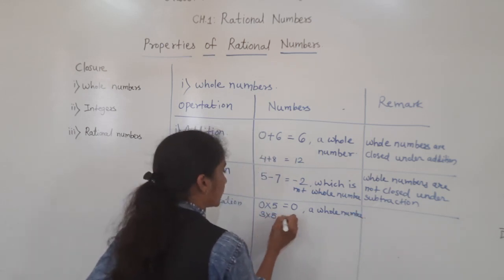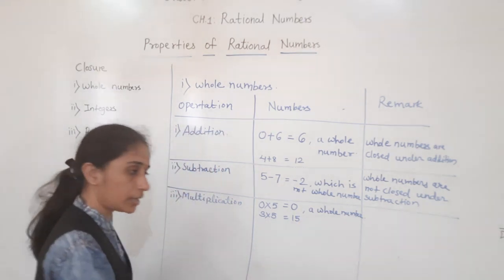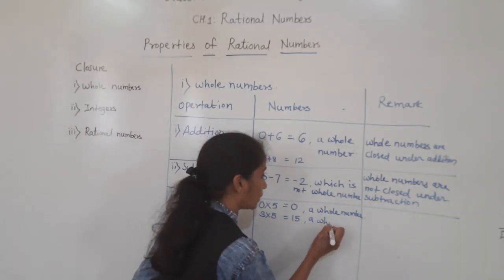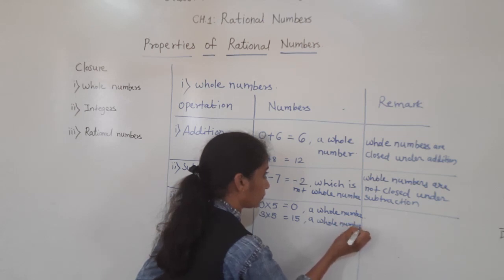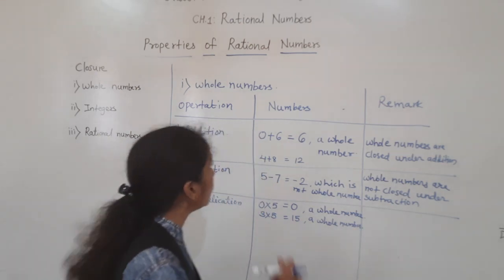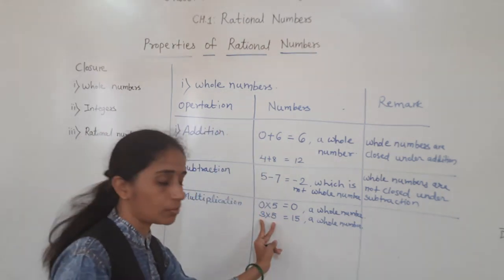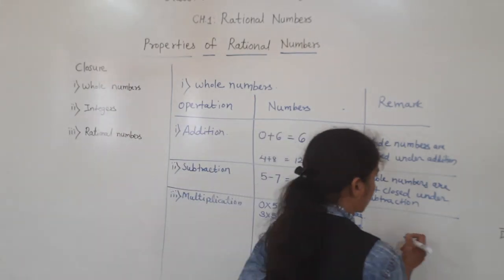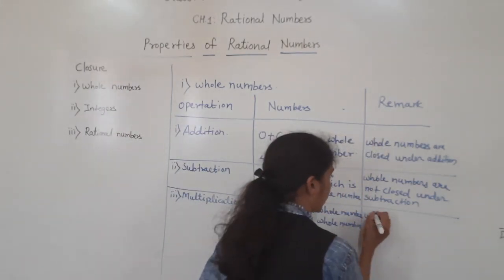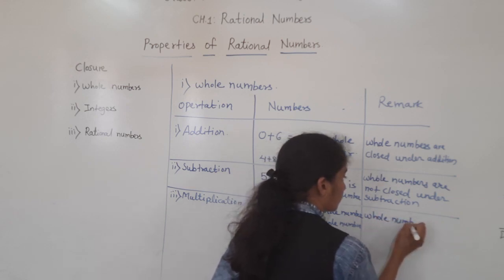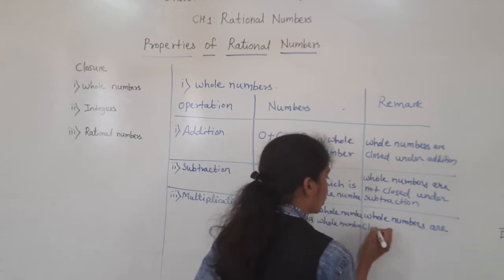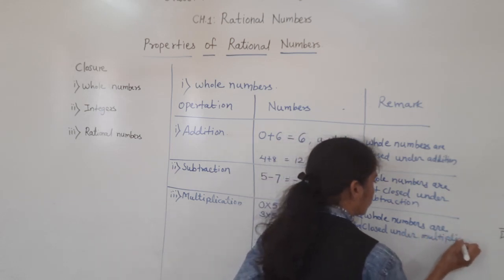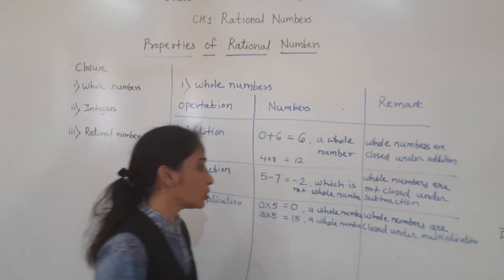Now suppose 3 times 5. Three fives are 15. Is 15 also a whole number? Yes. You can take any two whole numbers, multiply them, and the result is always a whole number. So, whole numbers are closed under multiplication.